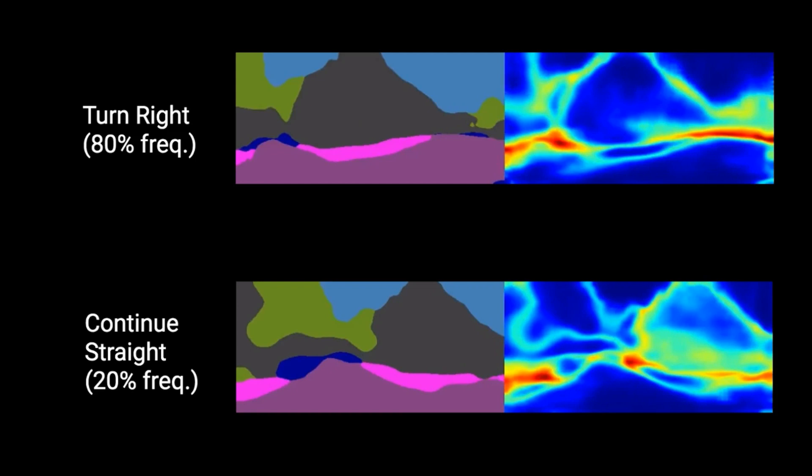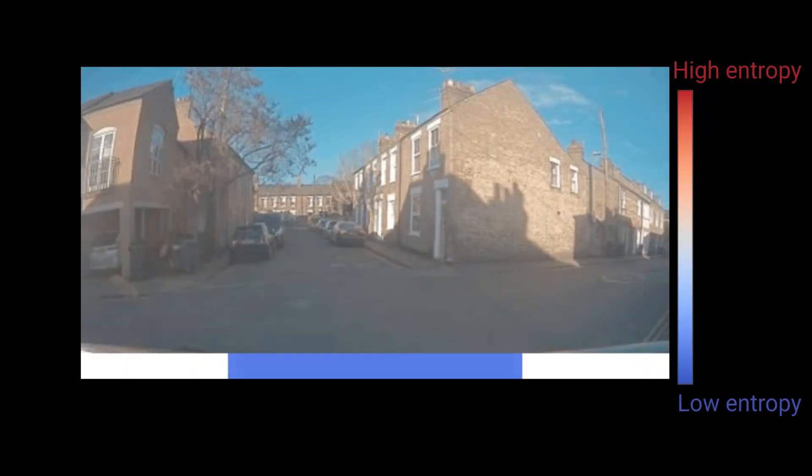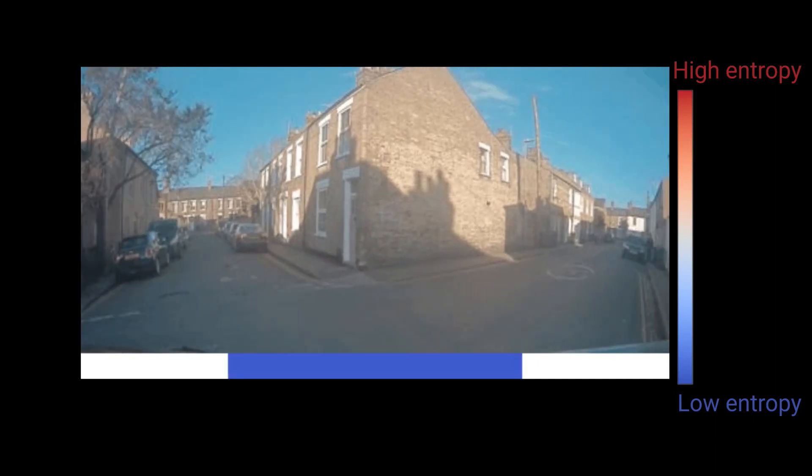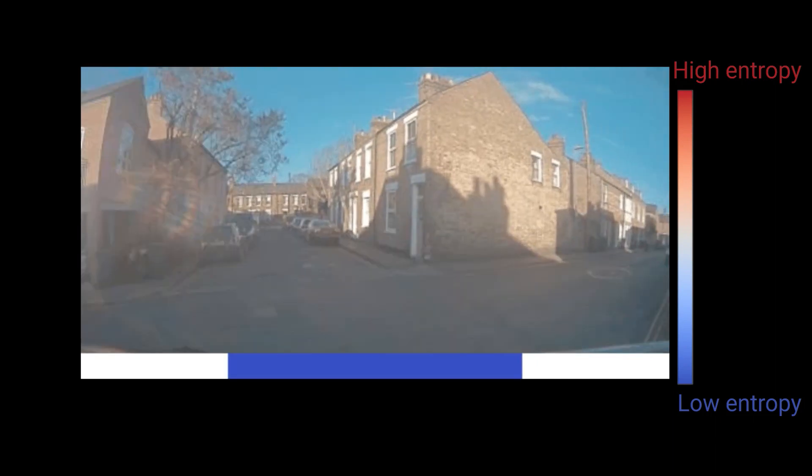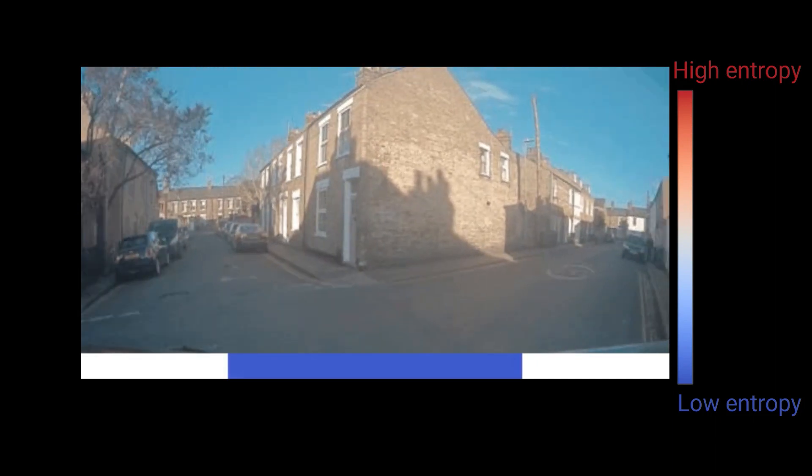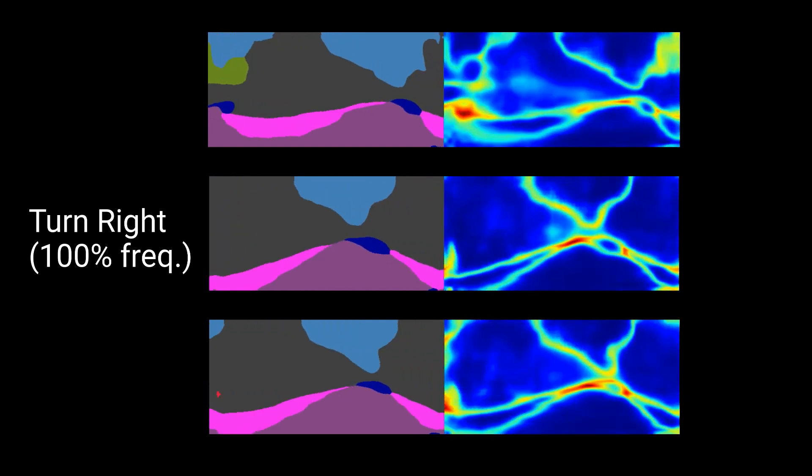Interestingly, roughly 80% of the samples correspond to turning right, and 20% of the samples are continuing straight. If we fast forward a little bit more, as the car is heavily engaged in the turn, we notice that the differential entropy dramatically decreases, as the model now only considers turning right as a plausible and safe course of action.